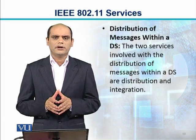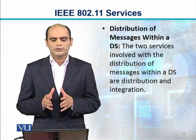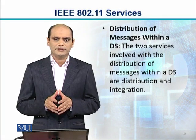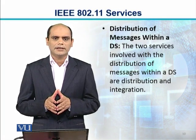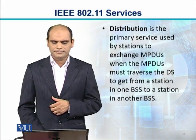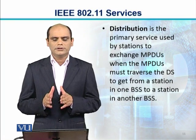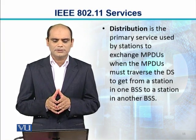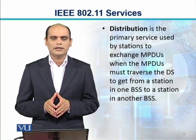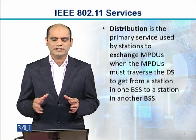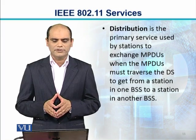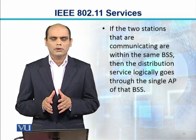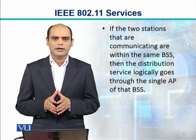The first service is the distribution of messages within a DS — a distribution system. The two services involved with distribution of messages within a distribution system are distribution and integration. Distribution is the primary service used by stations to exchange MPDUs when the MPDUs must traverse the DS to get from a station in one BSS to a station in another BSS. If two stations are communicating within the same BSS, the distribution service logically goes through the single access point of that BSS.